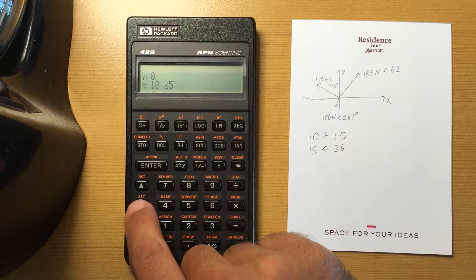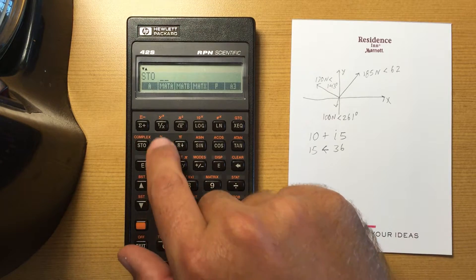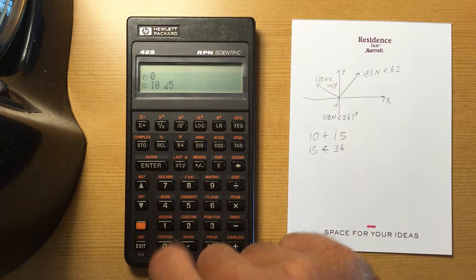But I could store it in an alpha register, so say A, I could store it there.